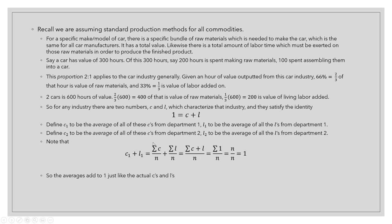We let c2 be the average of all the C's from department two, and L2 be the average of all the L's from department two. Notably, these averaged versions of C and L still add up to one. The proof: if I take c1 plus L1, that equals the average of the C's plus the average of the L's. Since C plus L equals one in every case, I'm just adding one N times, giving N over N, which equals one.